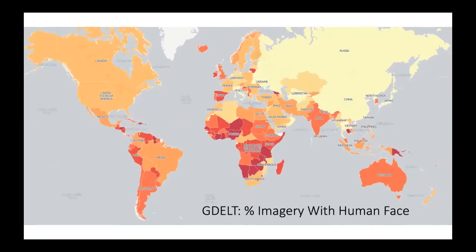This is a very interesting graph showing the percentage of news imagery from each country that depicted a human face. This allows us to understand how news is humanized. Here in the US, when we read about a car crash, you will see the actual car crash. In many other parts of the world, what you will see is a local police chief or politician standing at a podium describing what happened, or you'll actually see the people involved. It's a very interesting way to understand through imagery how humanized events are around the world — something we've never really been able to catalog at scale.